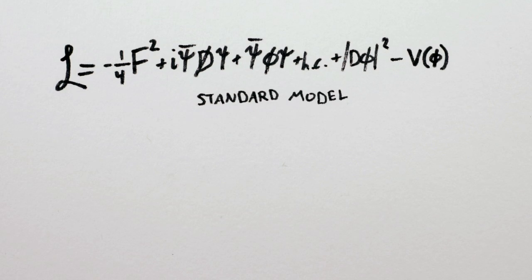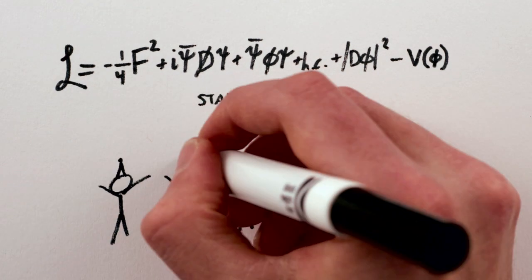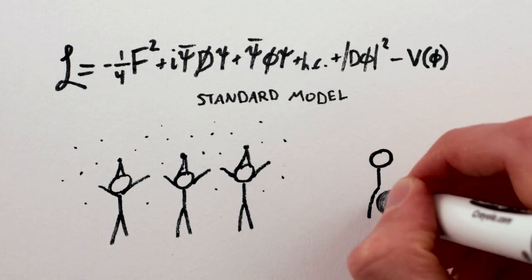And it's humbly called the Standard Model, because even when they discover the most accurate scientific theory known to man, physicists are modest.